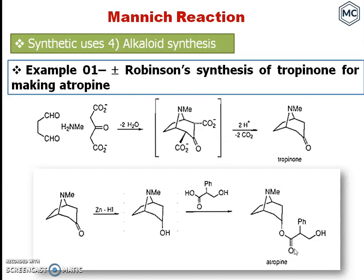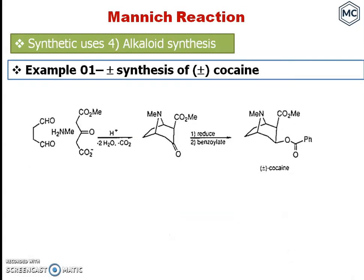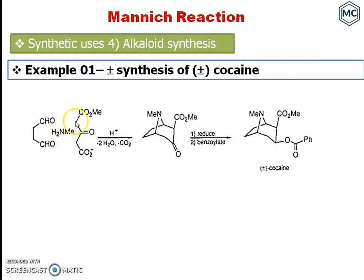Similarly, you can synthesize cocaine as an alkaloid synthesis application. As in the previous case, two Mannich reactions can occur, forming a common intermediate structure. On reduction and benzoylation, you get cocaine. That's all — thank you for watching.